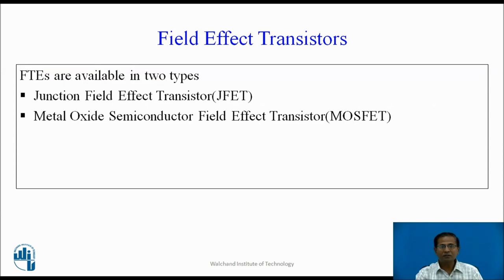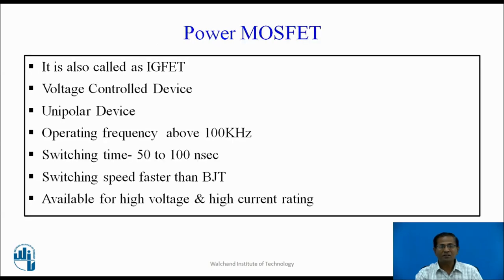Up till now, we studied the BJT — Bipolar Junction Transistor. BJTs are the current control device. Field effect transistors are another type of transistors, available in two types: junction field effect transistor J-FET and metal oxide semiconductor field effect transistor MOSFET. It is also called as IGFET — Insulated Gate Field Effect Transistor. It is the voltage controlled device. Output power is controlled by the input gate voltage.